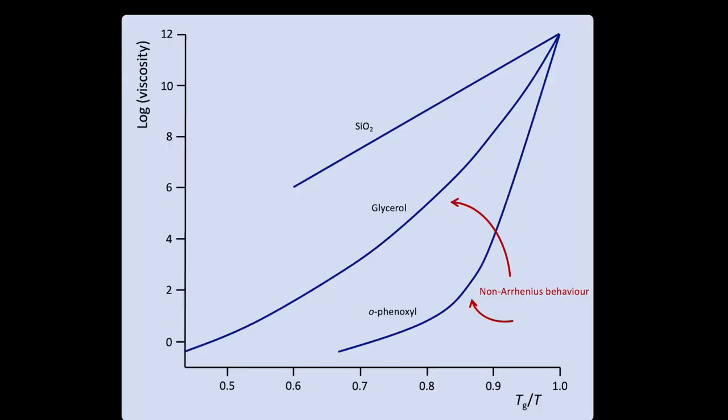When we see this behaviour, we say the material is a strong glass former. Usually, materials that are strong glass formers have covalent — that is, quite strong and reasonably well-aligned — intermolecular bonds. The alternative, and more common to pharmaceutical materials, behaviour is a non-linear change in log of viscosity with temperature, shown by glycerol and orthophenoxyl. We call these fragile glass forming materials.